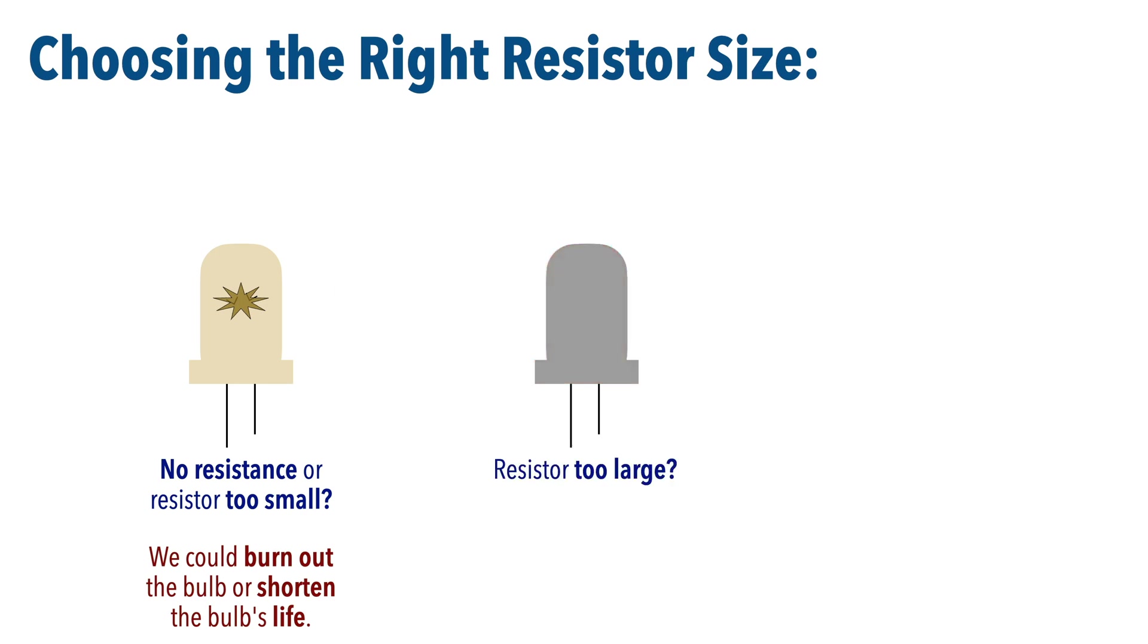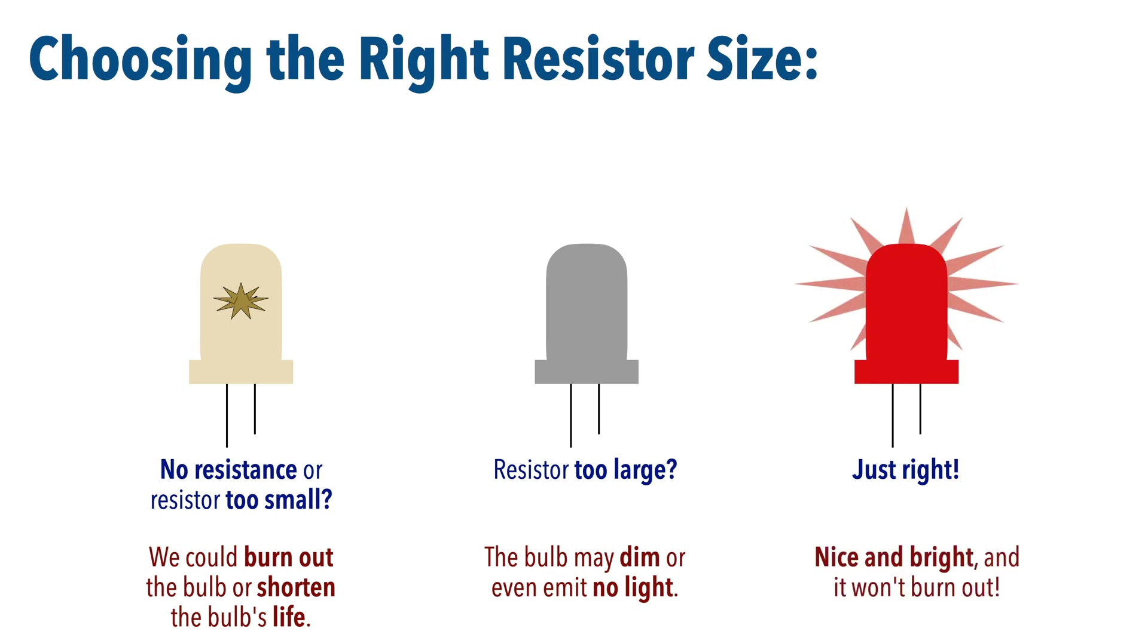But if we use a resistor that's too big, we'll unnecessarily dim our LED, and if we use a resistor that's much too big, we might not see any light at all. So what we want is a resistor size that's just right. Goldilocks! So how do we figure this out? Well, we use Ohm's Law.